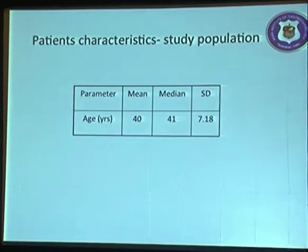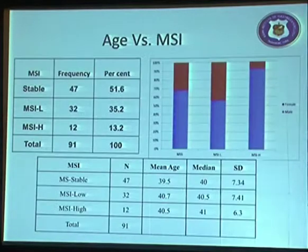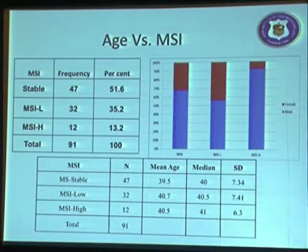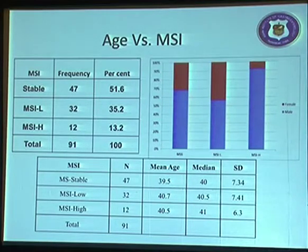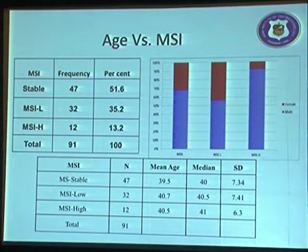In the study group of 91 patients, the mean age was 40 years, with male patients again comprising approximately two-thirds. Microsatellite stable tumours were seen in almost 50% of patients, microsatellite instability low in 35%, and microsatellite instability high in 13.2%. There was no significant difference according to age factor.